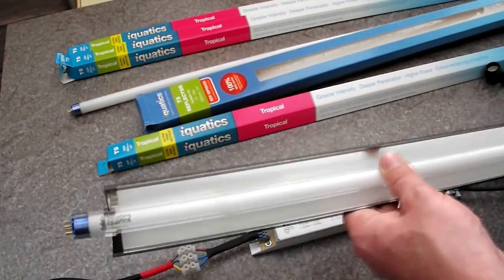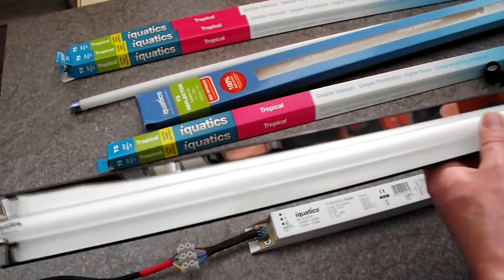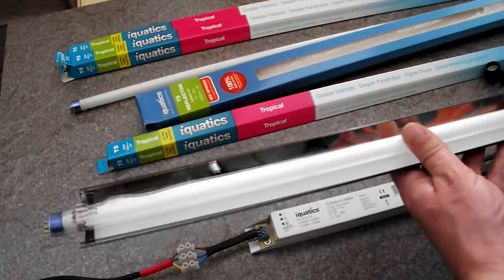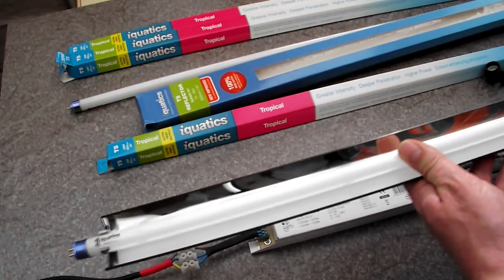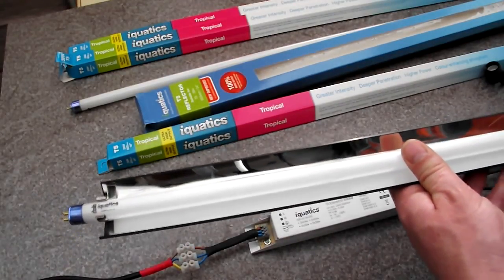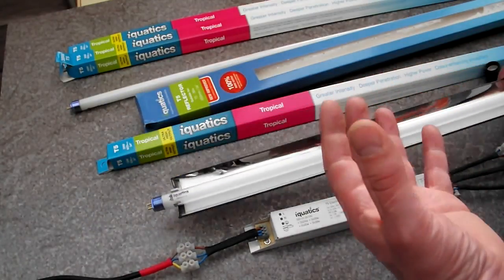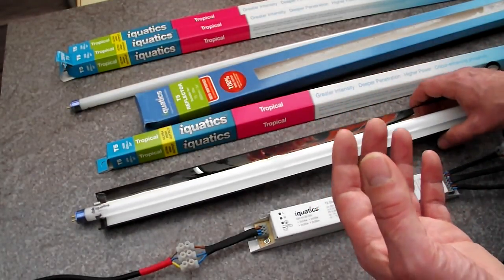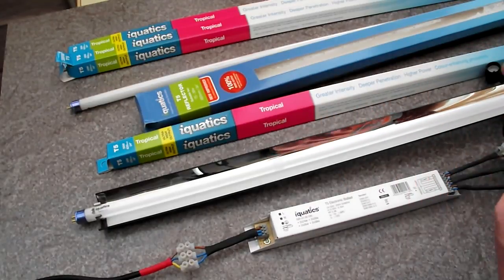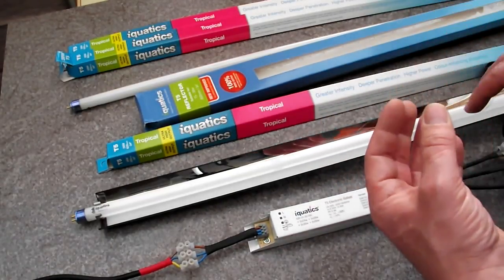Aquatics do a special deal with the tubes. It's buy two, get one free. So if you buy two of the tubes from them, you get a third one free. All my tubes are the same because I've got a planted tank. I've just got the tropical tubes. But if you've got reef, you can get whites and blues, and you can mix and match whatever you like. I've just got three tropical.